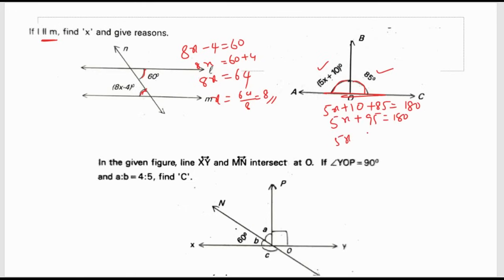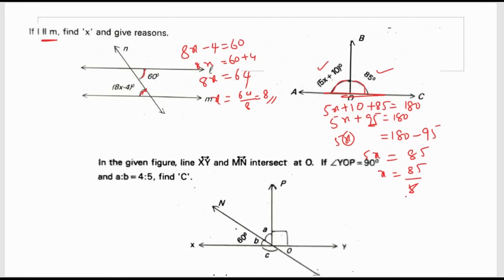So for X: first take 180, bring plus 95 to the other side as minus 95. So 5x is equal to 180 minus 95, which is 85. X is equal to 85 by 5 — 5 sevens are 35. So x is equal to 17.